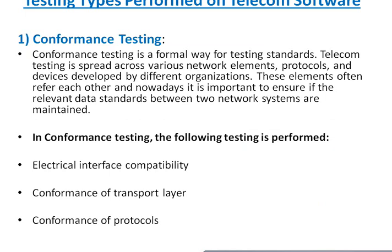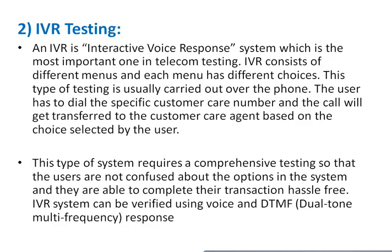Testing types performed on telecom software: First is conformance testing, a formal way of testing standard telecom. Testing is spread across various network elements, protocols, and devices developed by different organizations. These elements often reference each other, so it is important to ensure that relevant data standards between two network systems are maintained. In conformance testing, the following are tested: electrical interface compatibility, conformance of transport layer, and conformance of protocols.